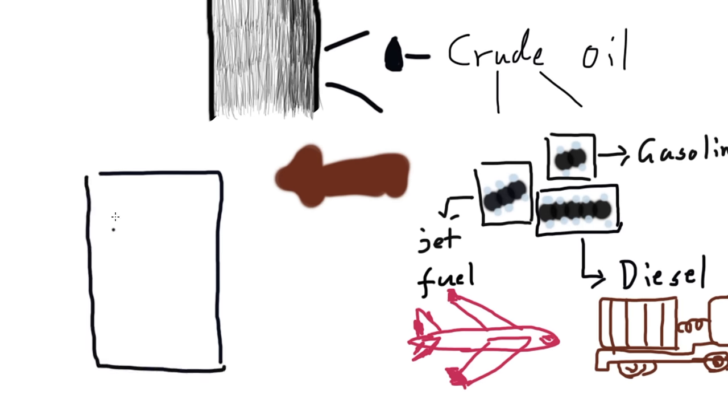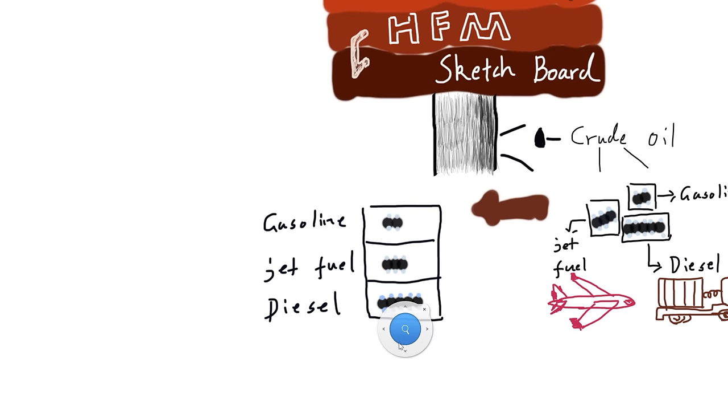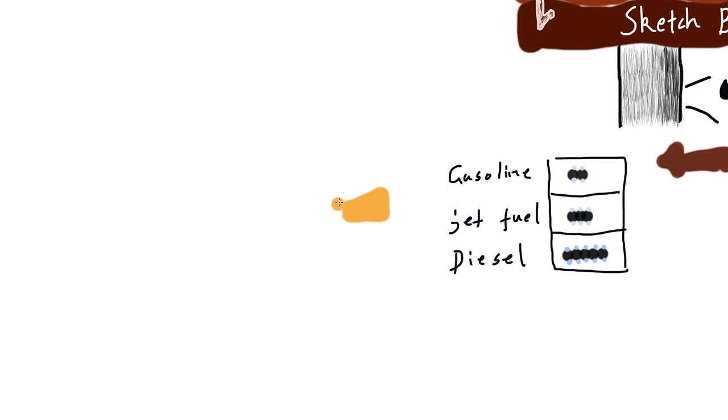So how do we separate all these different types of fuel from the crude oil? Well, they all have different boiling points, so that we could use a distillation column to separate them out.